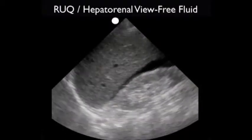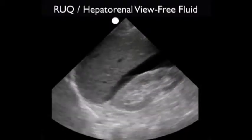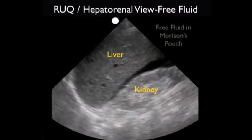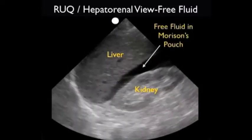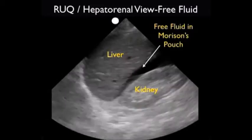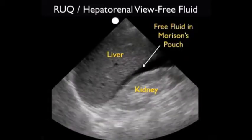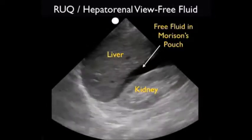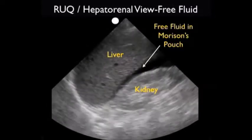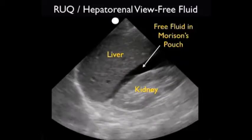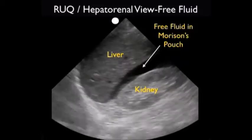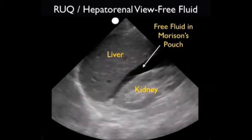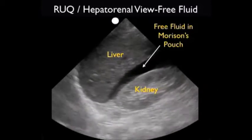Here's a positive ultrasound examination from a patient who was hit by a car while crossing the street. We see the liver in the middle of the image, the kidney located inferior and posterior to the liver, and in between them in that potential space known as Morrison's pouch, we see a dark or anechoic fluid collection — actually a pretty large stripe in this patient. This represents the positive examination, the presence of fresh fluid, in this case blood, within Morrison's pouch.